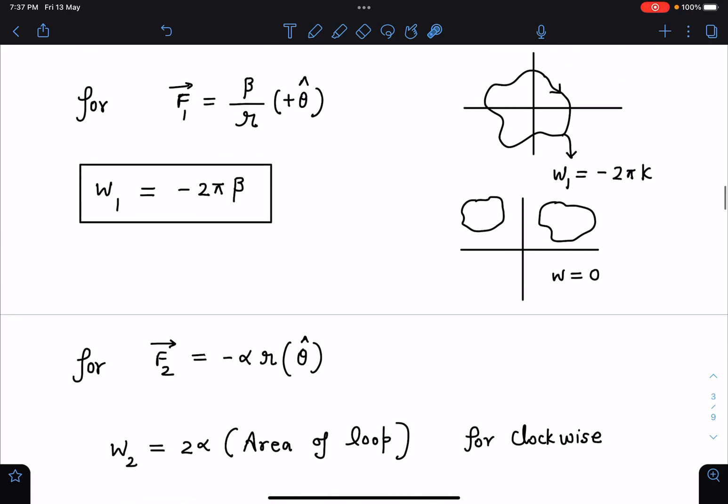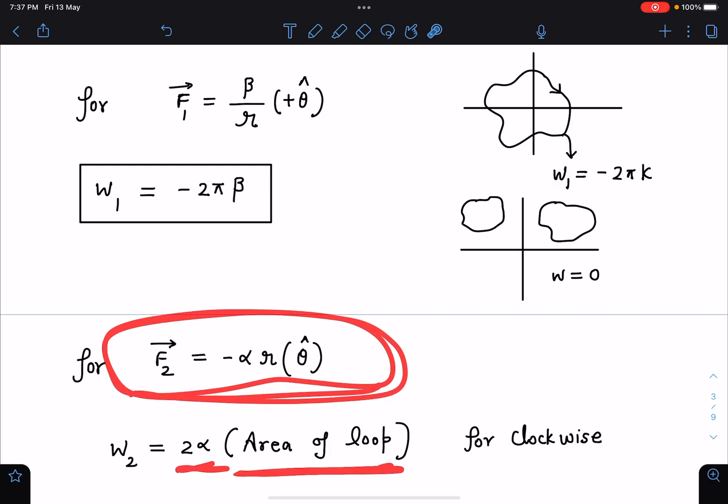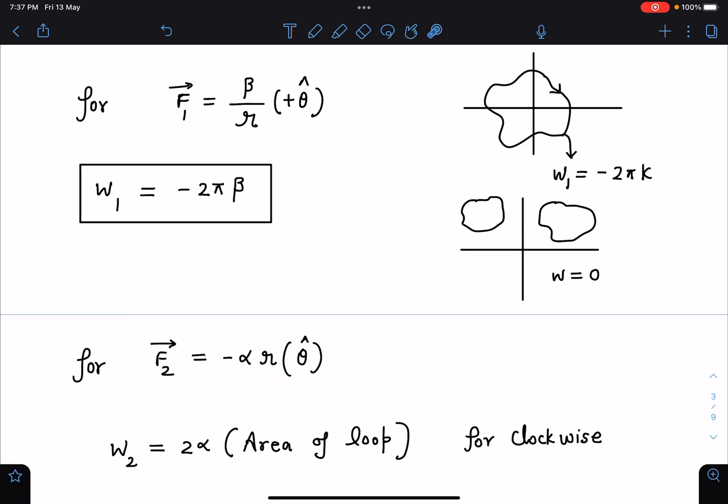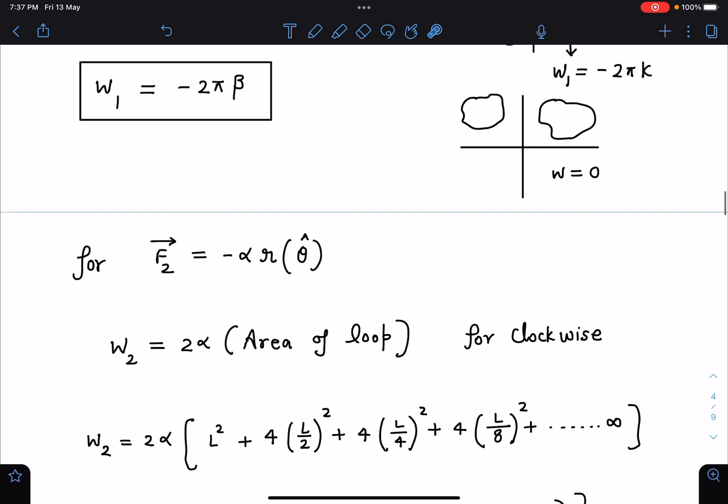Similarly here for force F2, for this we derived the general result that the value of work done by this force is simply 2 alpha times area of the loop, 2 alpha times area of the loop, whatever path closed loop we are taking. And for clockwise sense minus sign will come, for anti-clockwise sense plus sign. In this case it's very simple that 2 alpha will come.